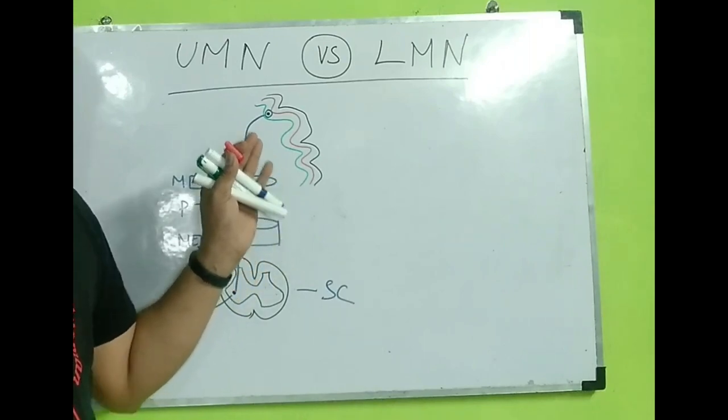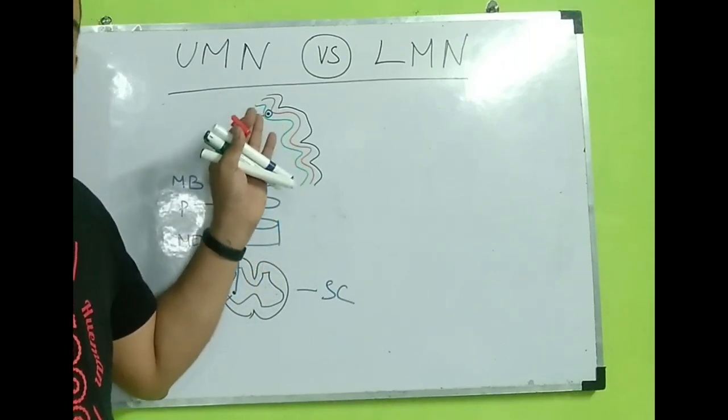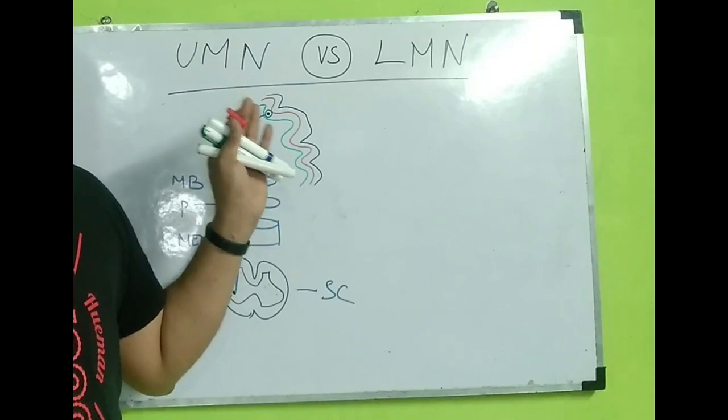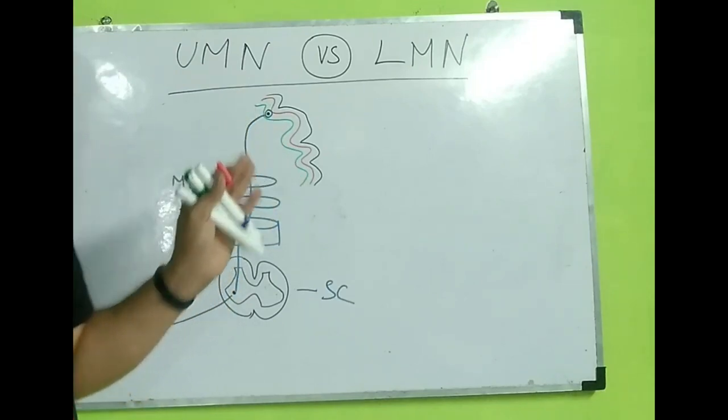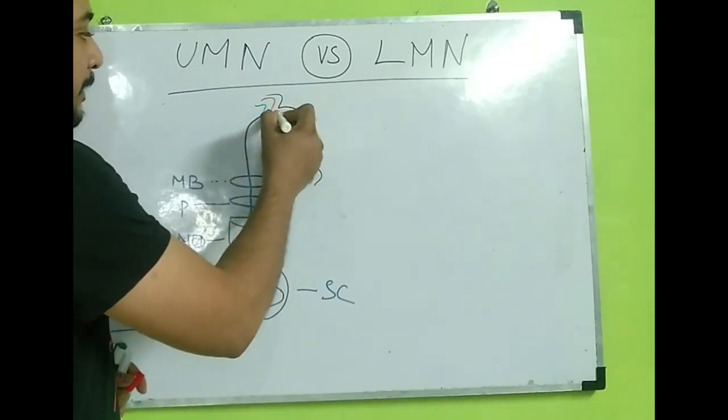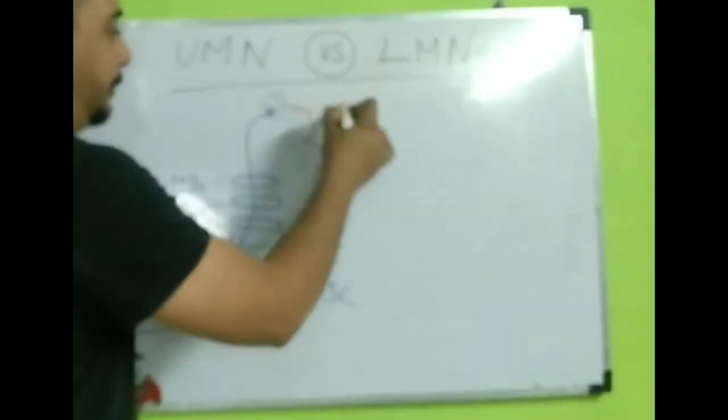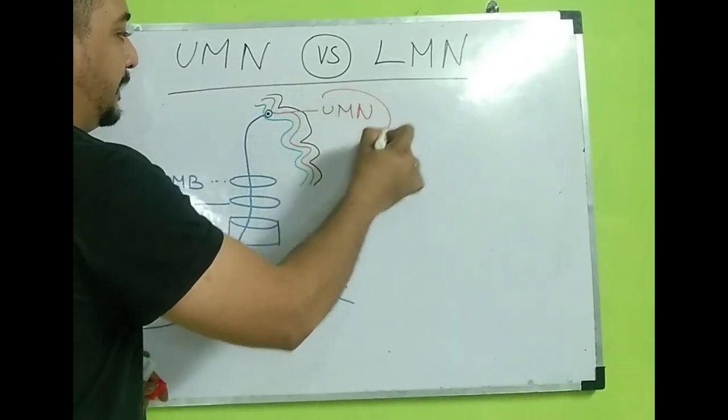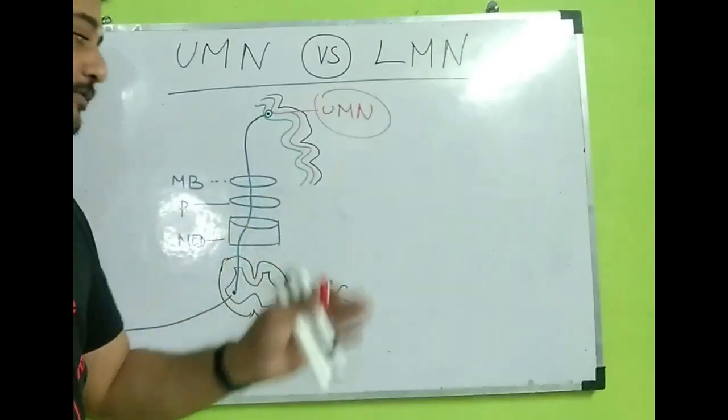The cerebral cortex is made up of six layers. In that, one layer is a pyramidal layer from where the pyramidal tract starts. So this is the upper motor neuron. Upper motor neuron is located in the cerebral cortex for the pyramidal tract.